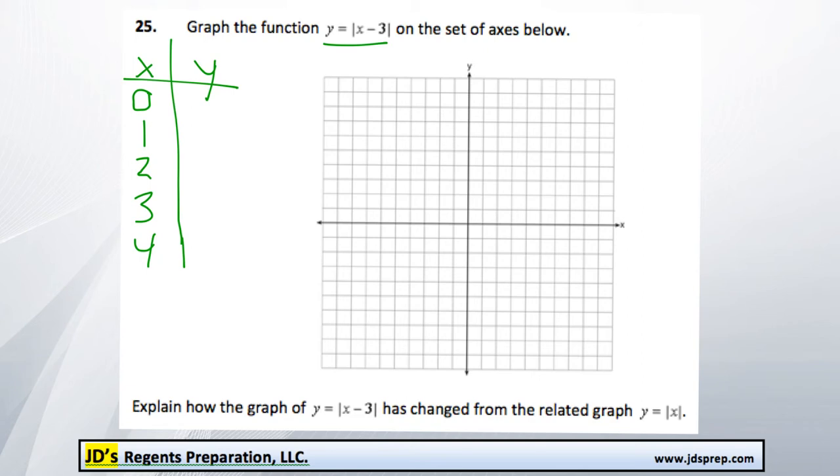Okay, so the absolute value of 0 minus 3, so 0 minus 3 would get us negative 3, but because we've taken the absolute value of it, it would become positive 3. So 0, 3 is right here. Next point, if x is 1, we would find the absolute value of 1 minus 3. Now 1 minus 3 is negative 2, but the absolute value of that would make it positive, so it's positive 2. And that point is right around there.